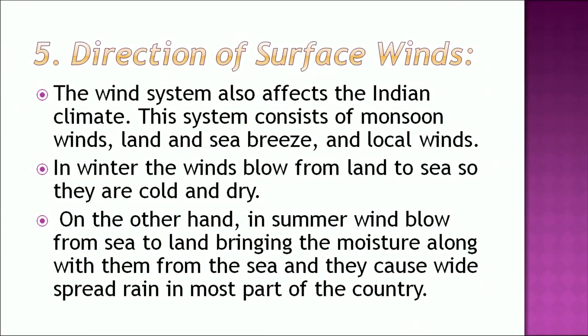Another factor influencing the climate is the direction of surface winds. The wind system also affects the Indian climate and consists of monsoon winds, land and sea breeze, and local winds. In winter, winds flow from the land to the sea, so they are cold and dry. In summer, winds blow from the sea to the land, bringing moisture along with them and causing widespread rain in most parts of the country. Upper air currents also influence the climate system of India.